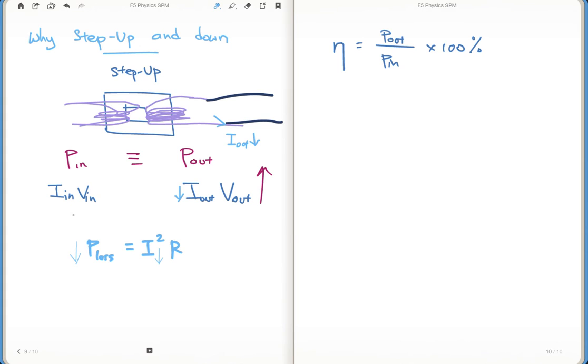So that's the explanation of why do we step up a transformer. I mean, you use a step-up transformer from the power station to a substation. So why step it up? Because to reduce heat loss.